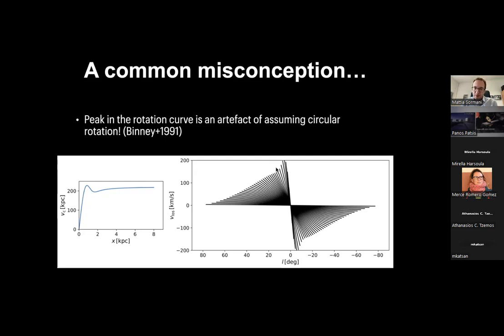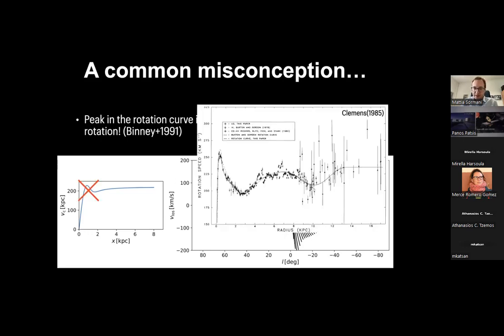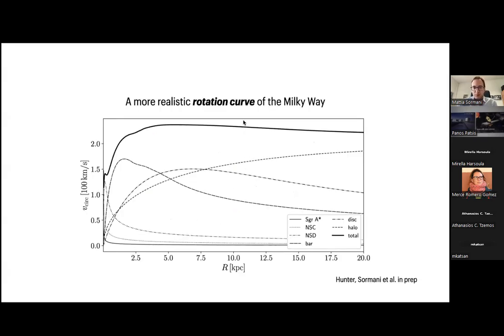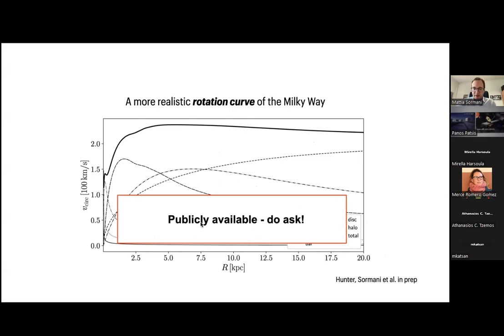This brings me to a common misconception: sometimes you find a rotation curve with a peak in the inner part, because people assume circular motion and add a peak to explain the LV plot. This is an artifact of assuming circular motion where motion is actually non-circular. The rotation curve from Clemens 1985 is okay out to three kiloparsecs from the center, but inside three kiloparsecs it cannot be trusted — the peak should not be there; a more realistic rotation curve should go down instead. This corrected rotation curve is publicly available.